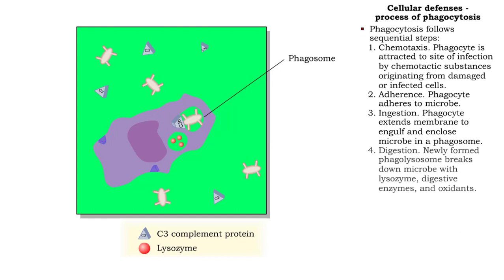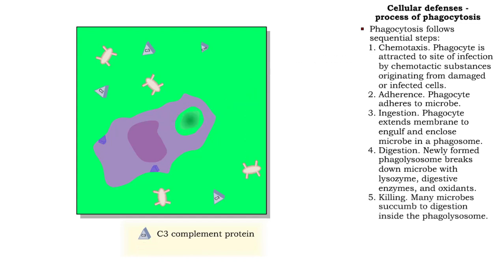The fourth step is digestion. The phagosome merges with lysosomes, forming a single larger phagolysosome. Lysosome digestive enzymes and toxic levels of hydrogen peroxide, hypochlorous acid, and other oxidants break down the microbe's structure. Digestion leads to death of many types of microbes.